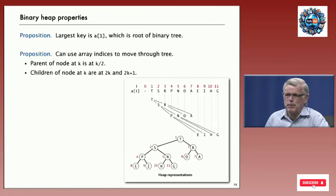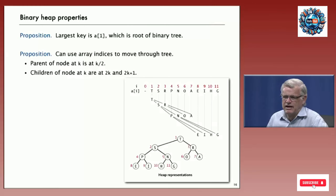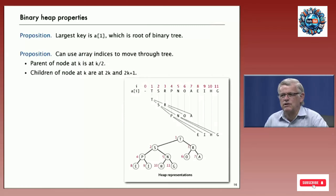You can also use the array indices to move through the tree. If the node is at index K in the array, then its parent is at K/2 (integer divide). For example, the parents of H and G are both N — H is at 10, G is at 11, N is at 5, so both 10/2 and 11/2 by integer divide equal 5. Going the other way, the children of the node at K are 2K and 2K+1. So we don't need explicit links at all to represent these data structures.